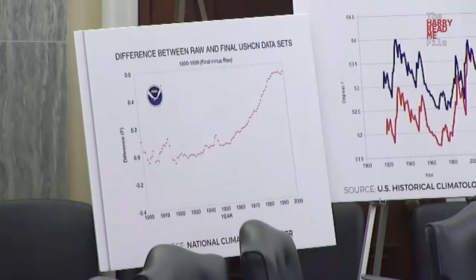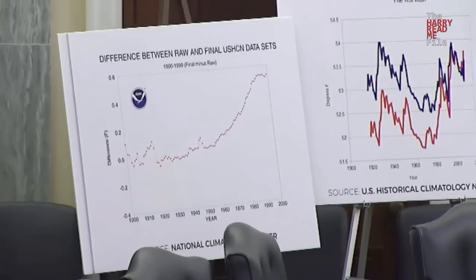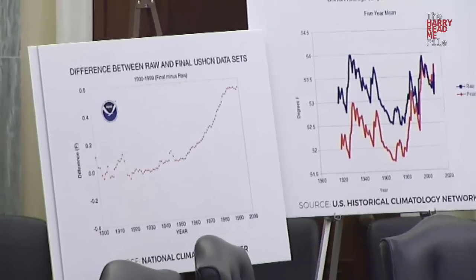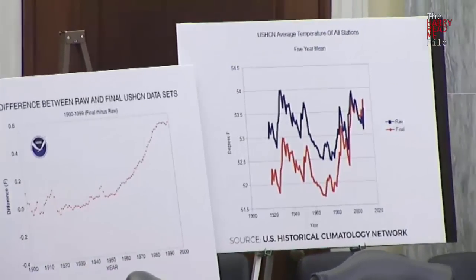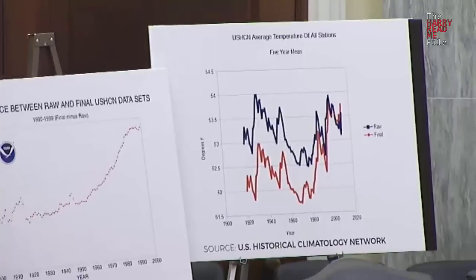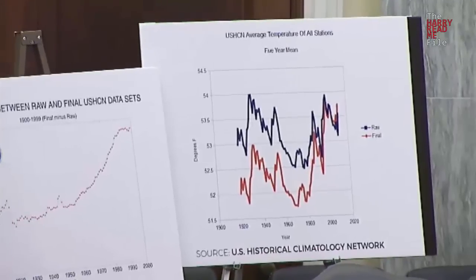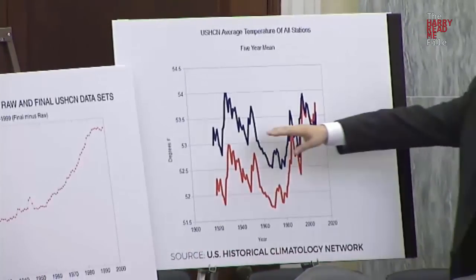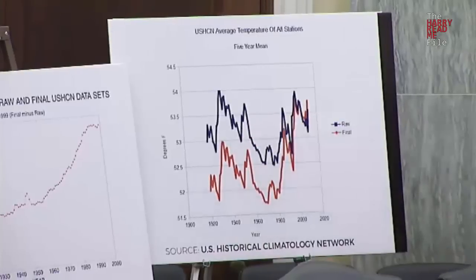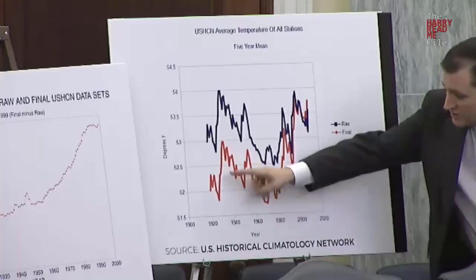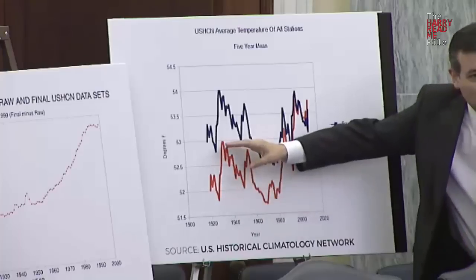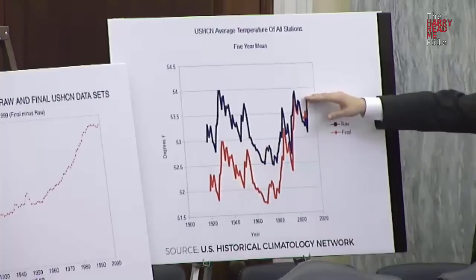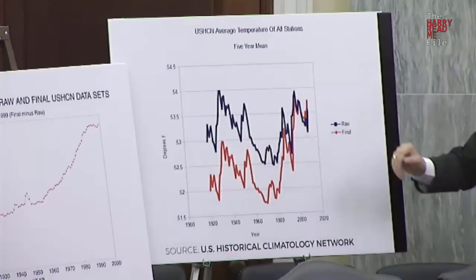The chart on the right likewise looks at the raw numbers on top, which demonstrate a fair degree of uniformity. But the adjusted numbers show that the old temperatures are cooler and the new temperatures are warmer.